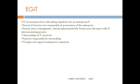IT must align itself and support the enterprise's objectives. EGIT also covers IT resource management and IT performance management — how much is being invested and what return is coming back. Compliance management is also included, covering requirements such as PCI DSS, HIPAA, SOX, and GDPR.